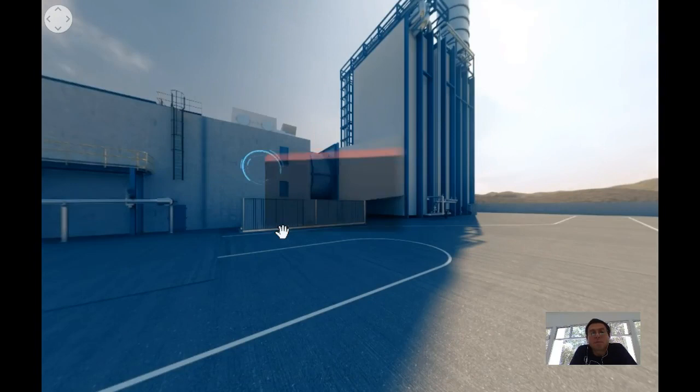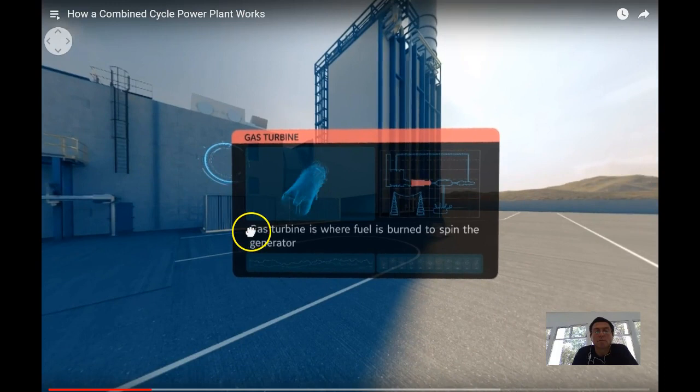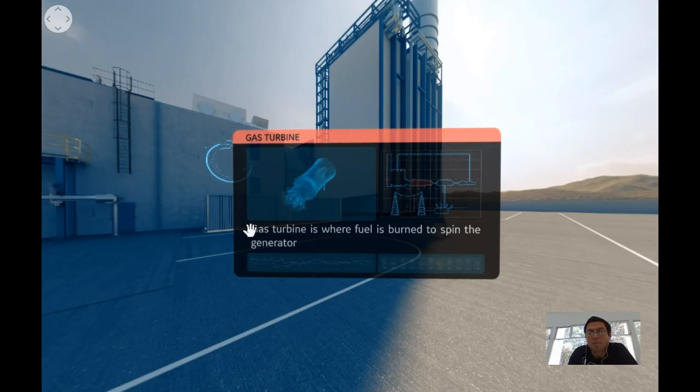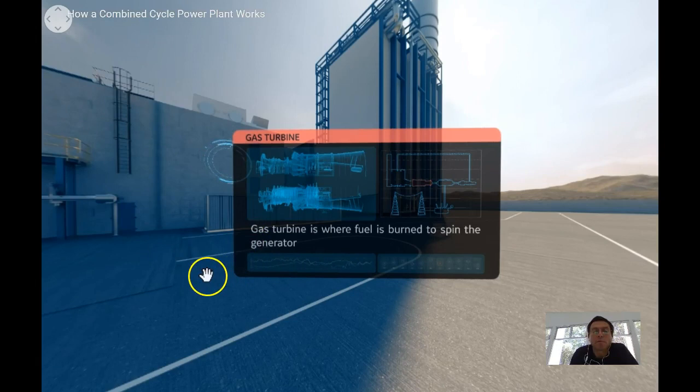Now please follow me and let's move towards our first stop. In front of us you can see a gas turbine, this one is our 9HA. This turbine weighs approximately 400 tons, almost the equivalent weight of a fully loaded Boeing 747 aircraft.